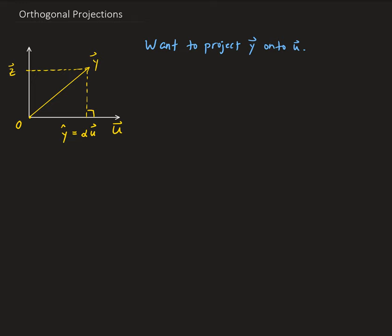So first, the difference between y, the vector y, and alpha u, we're going to call that z. So z is equal to y minus alpha u. Basically, z here is the orthogonal complement of u. In that case, since z is an orthogonal complement of u, that means when you dot z and u, you're going to get zero.